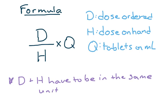The biggest thing when it comes to the Q is that if it's tablets, it's only one. One tablet, one capsule, one caplet. Milliliter could be other numbers. It could be one, it can be 0.5. The other thing is that the D and the H, what's ordered and what you have on hand, have to be in the same unit. In theory, it doesn't matter which unit you change it to, but usually they'll tell you to change the dose that's ordered into the matching unit.